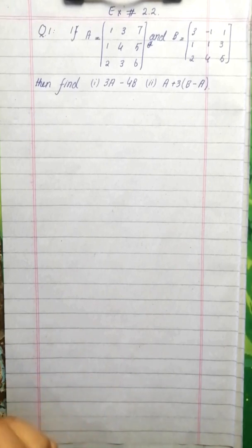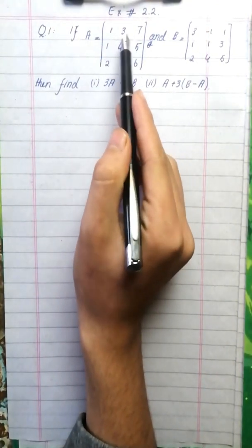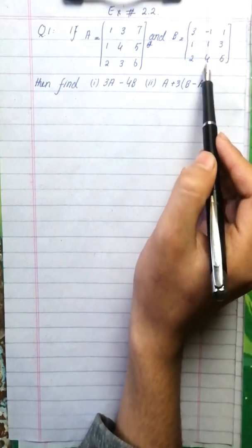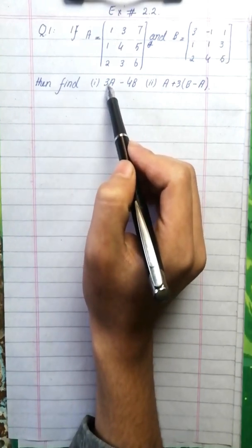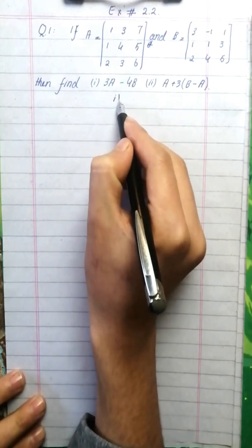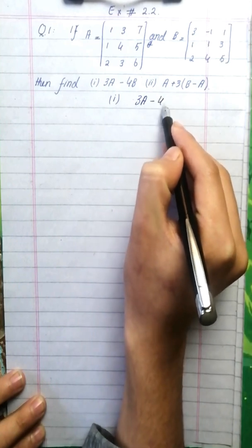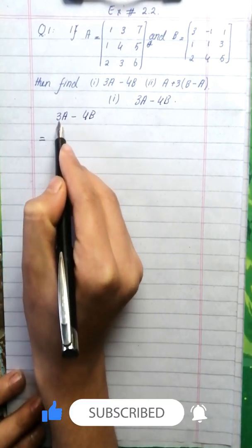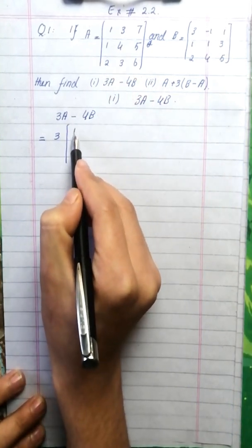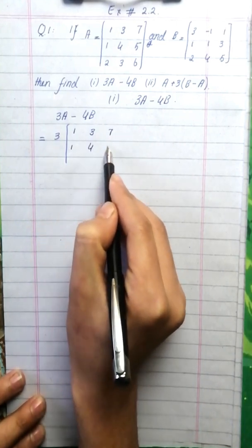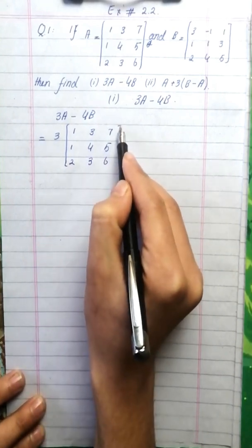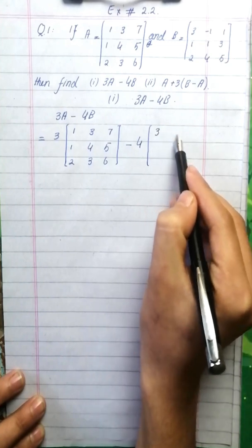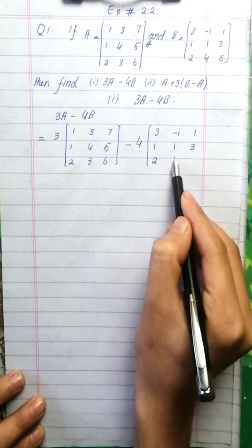Exercise 2.2, question number one. Matrix A equals 1 3 7, 1 4 5, and 2 3 6. Matrix B equals 3 minus 1 1, 1 1 3, 2 4 5. Part 1 mein humein 3A minus 4B find out karna hai, to sabse pehle hum isi ko solve karenge.